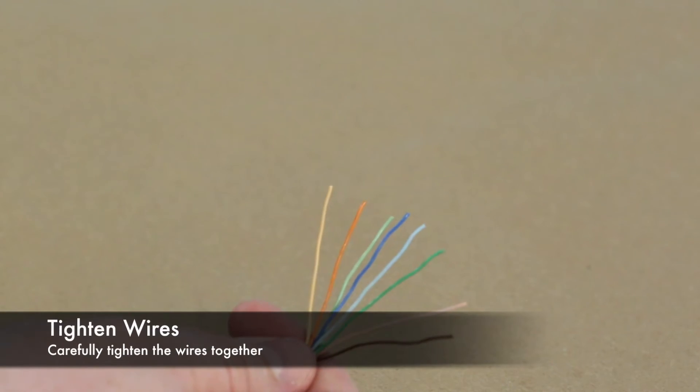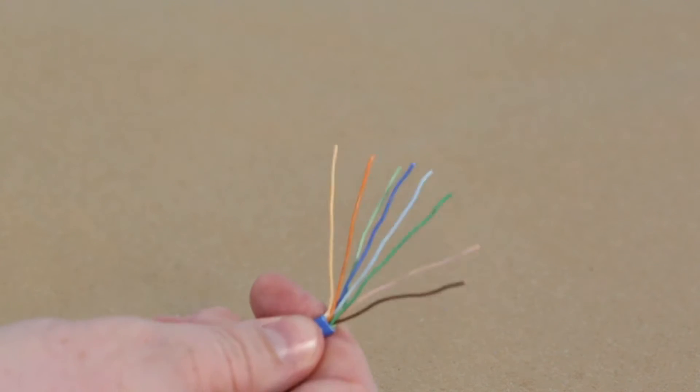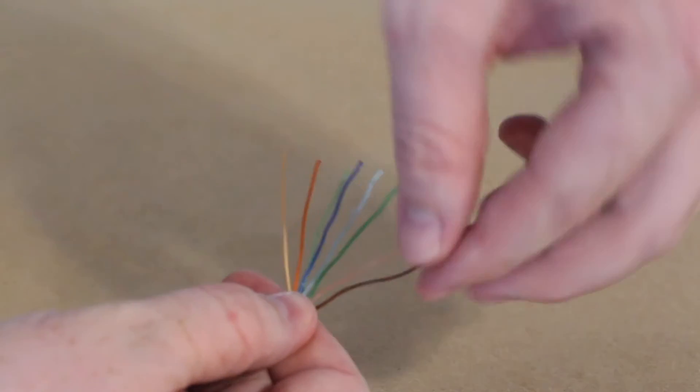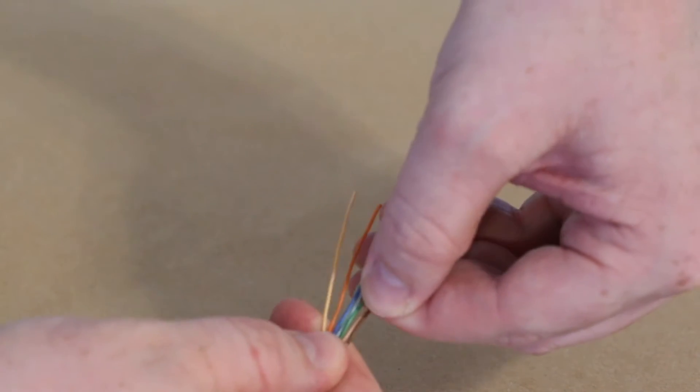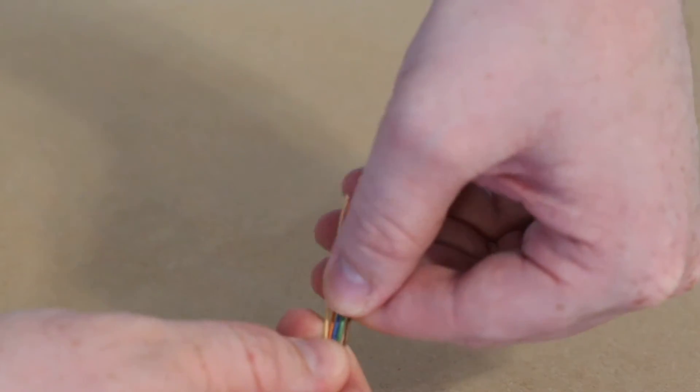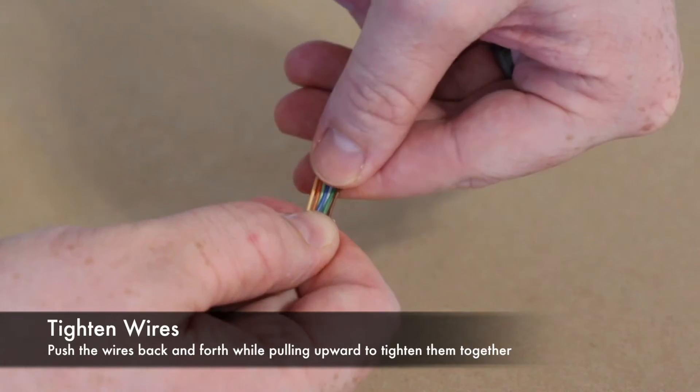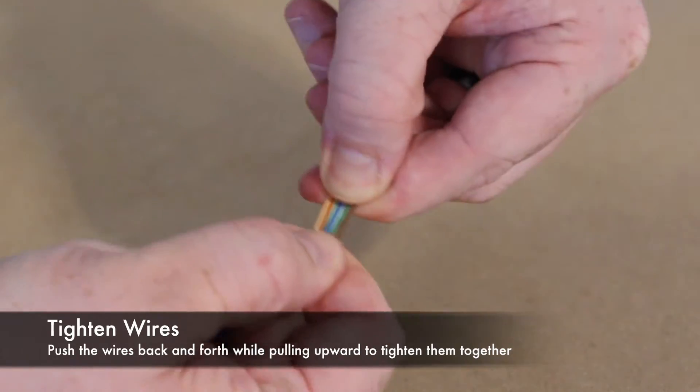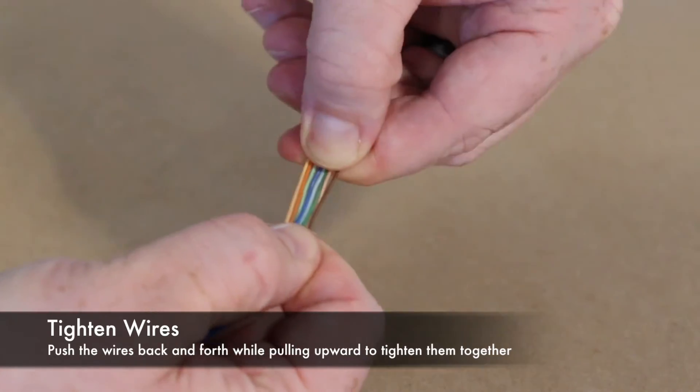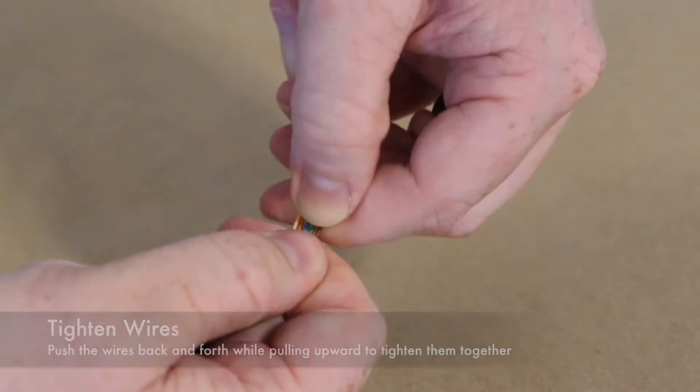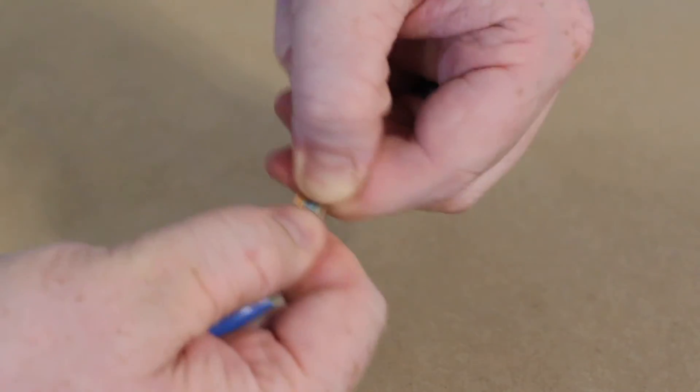So now we're going to get the wires closer together while keeping them in order, that way they'll fit through the RJ45 connector. What I like to do is grab the base here and then slowly work together the wires, making sure they stay in proper order. Next I'm going to grab this end of the cabling and slowly work back and forth while pulling to get these nice and tightly spaced together.